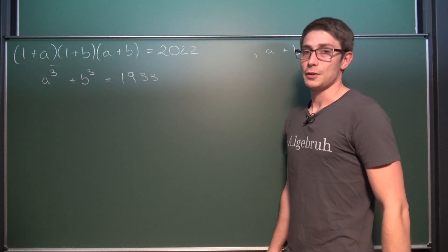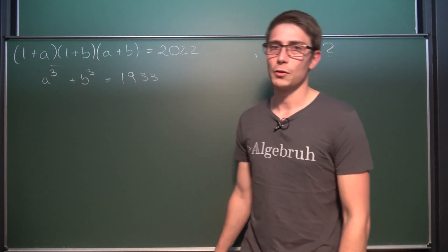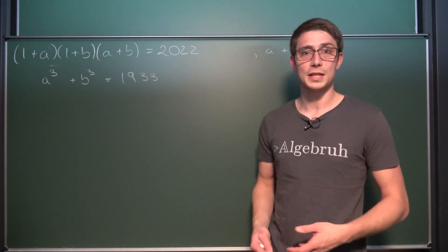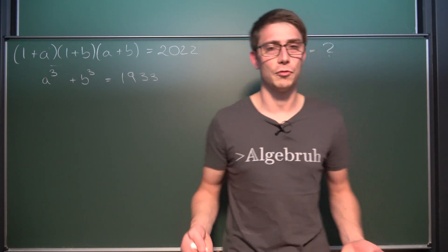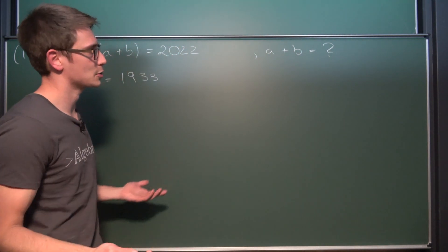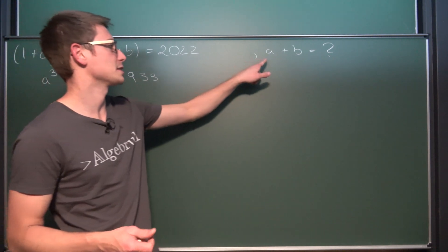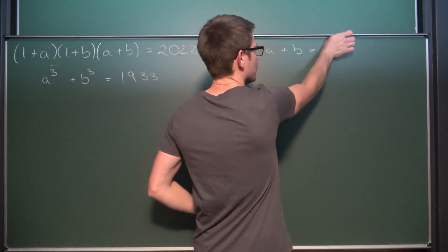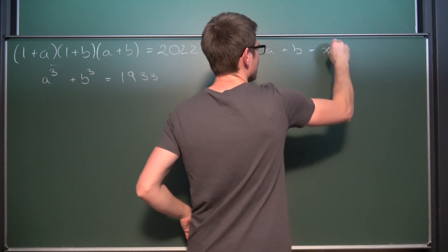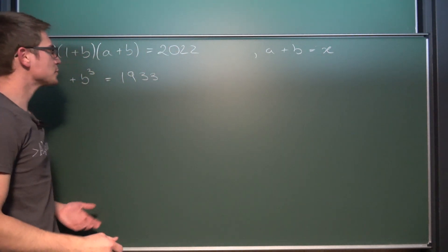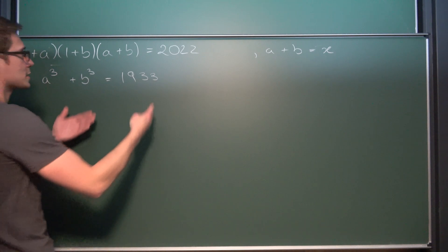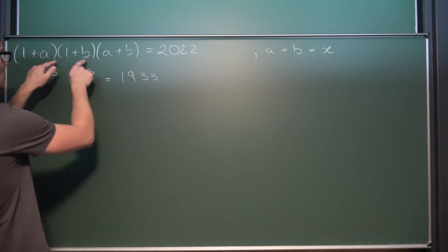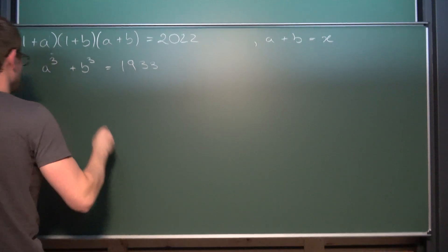Now the first thing we are gonna do is we are going to multiply a bunch of things out and take a look at the cubic formula. Also the thing we are striving after to find is the sum of a and b. So we are just going to call the thing that we are looking for x for now. So the first thing we're gonna do is we're going to substitute our x into this first equation and also multiply this part out a little bit.